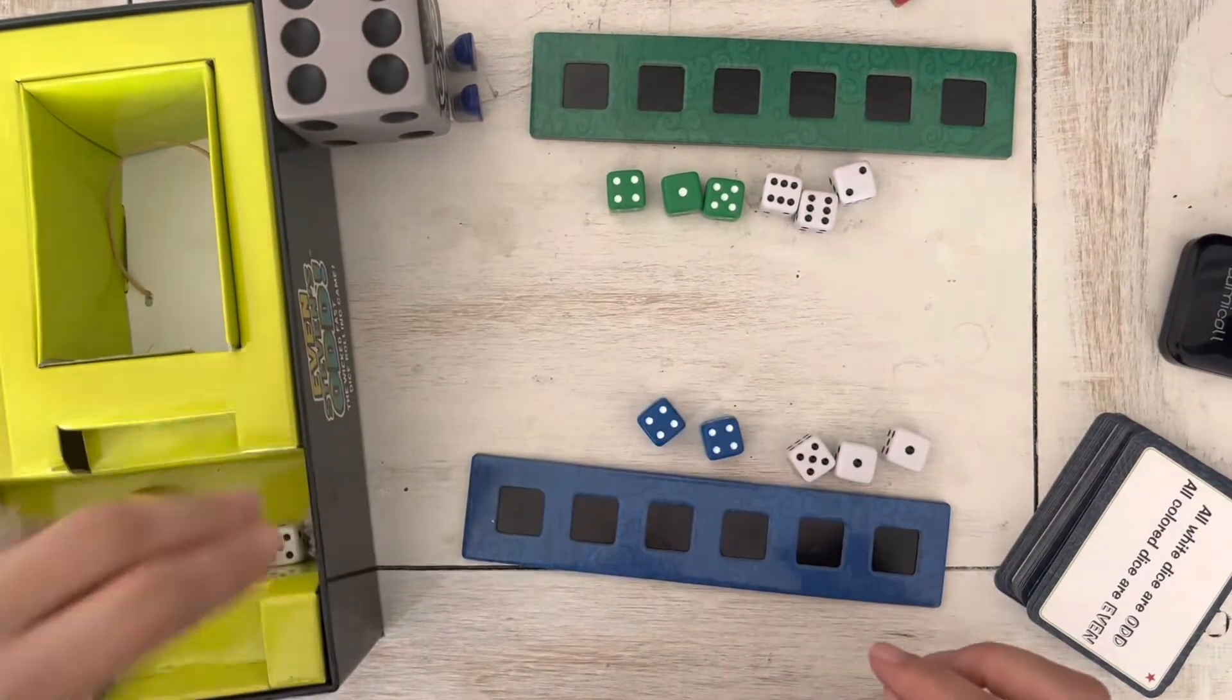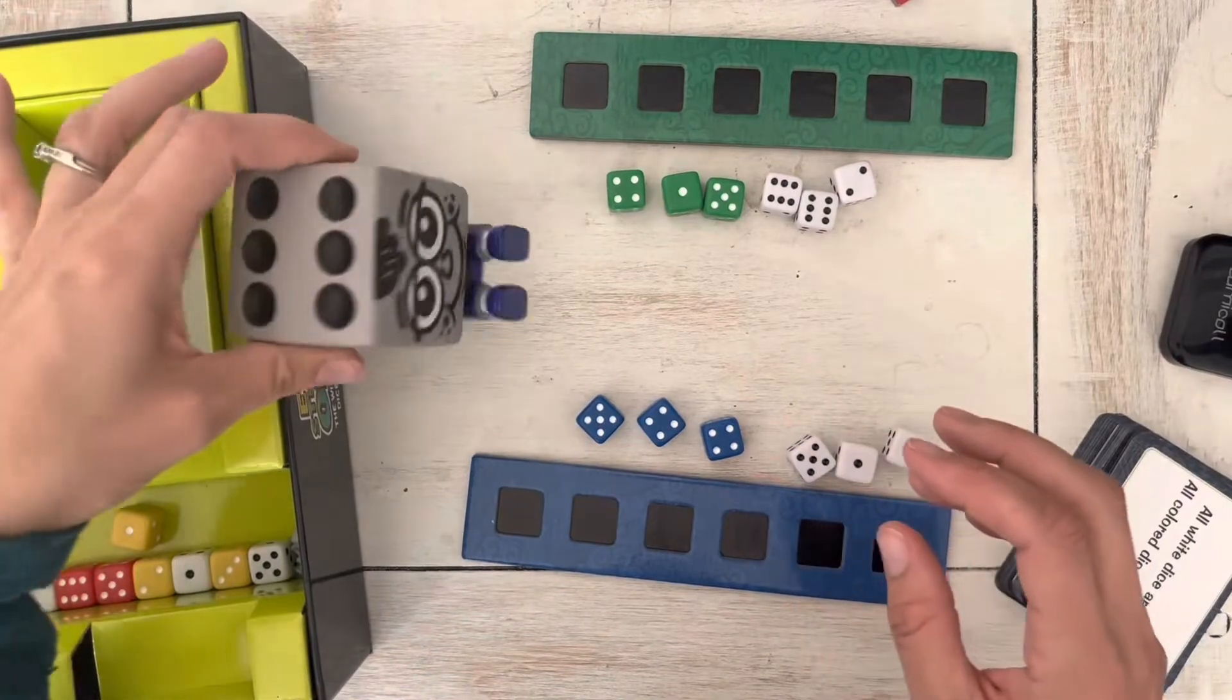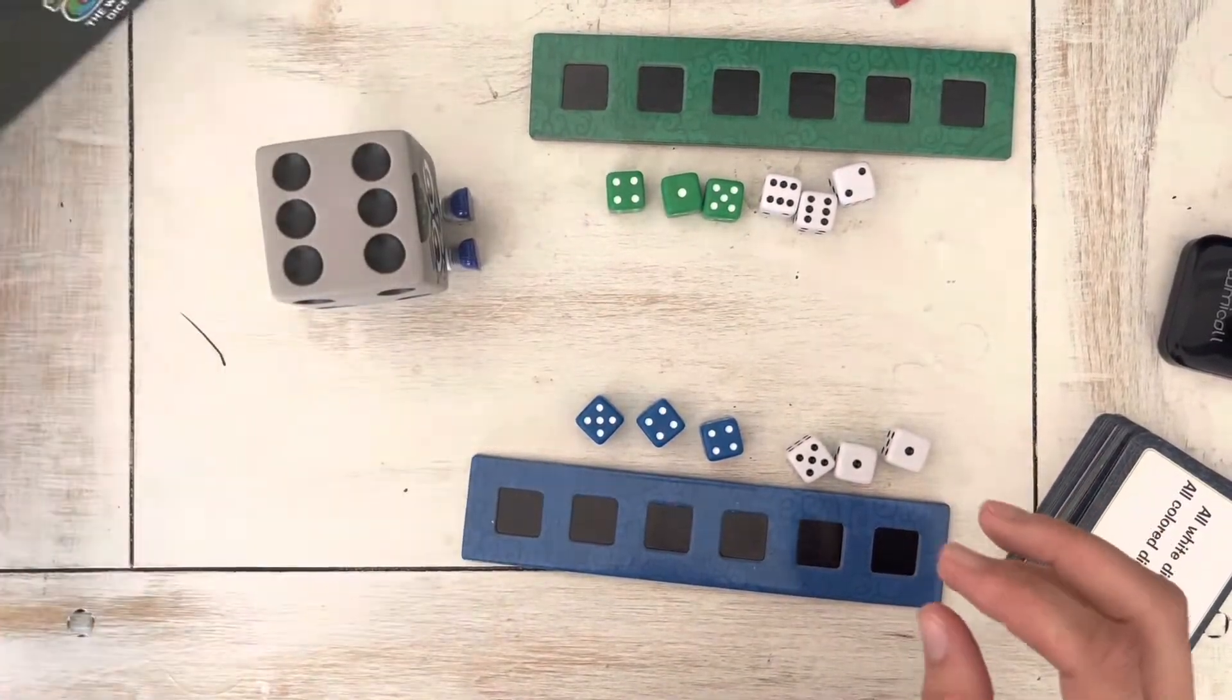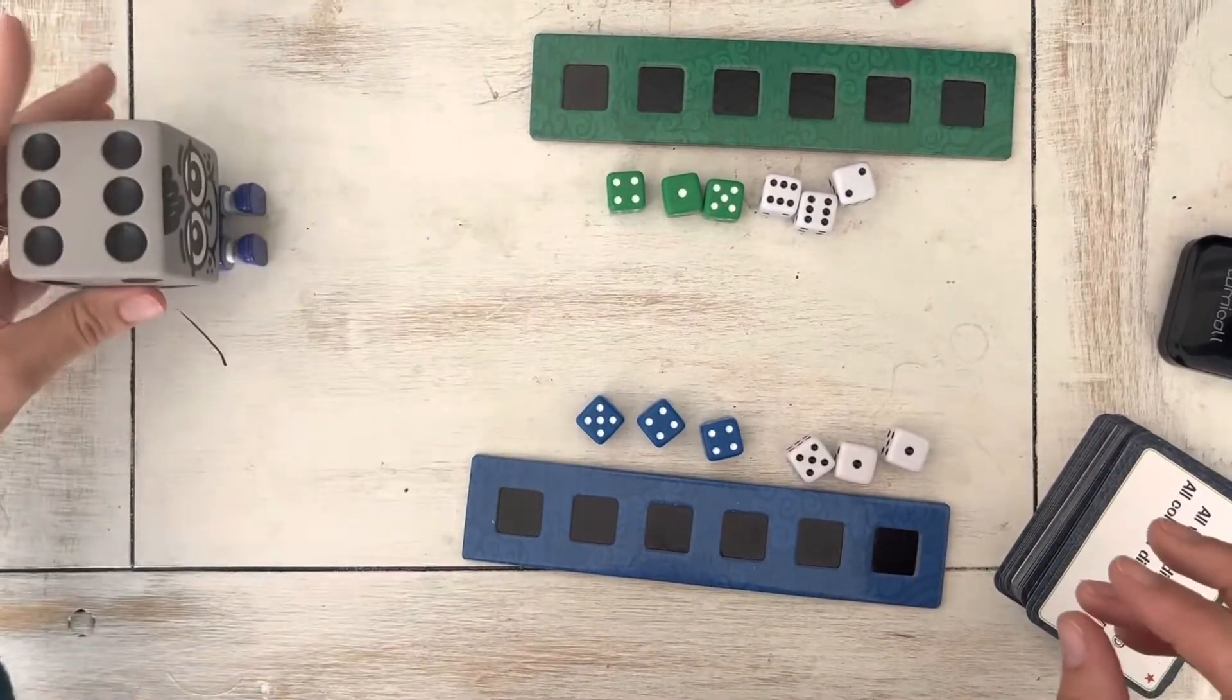And three dice that matches their board color. So mine will be blue, my opponent's would be green. And then this little thing stands somewhere where people can equally grab it quickly off to the side here.